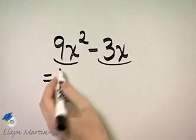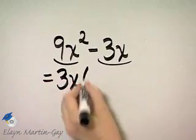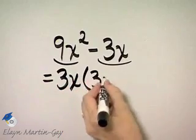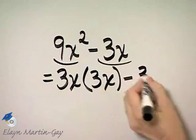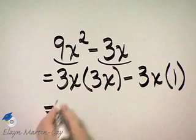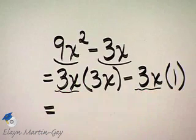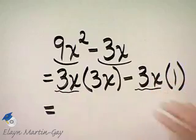In other words, 9x² is 3x times 3x, and this term 3x is 3x times 1. Notice you can see that common factor of 3x in these two terms.